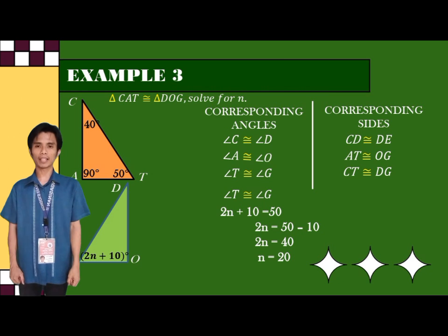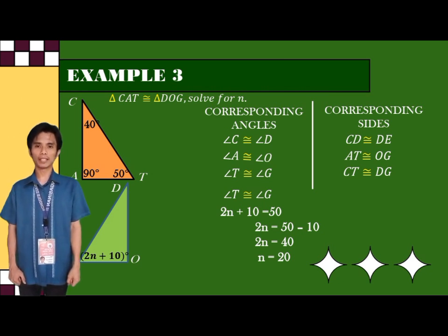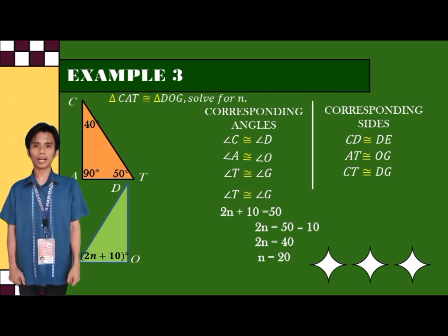And from that, we will get 2N is equal to 40. And we are going to divide both sides by 2, and we will get N is equal to 20.